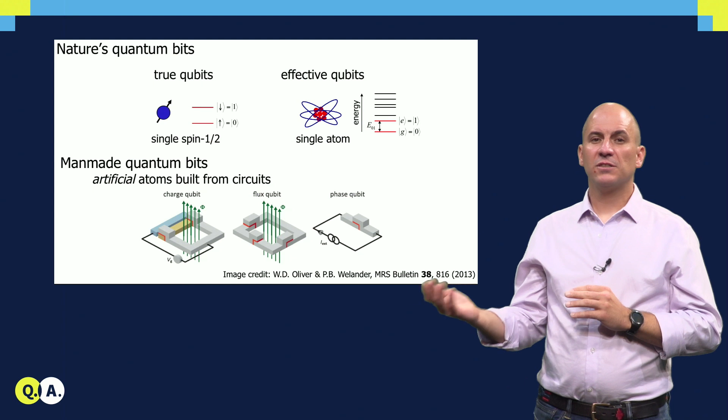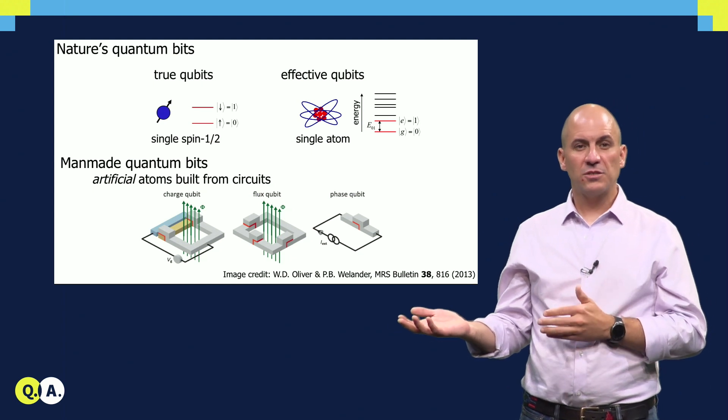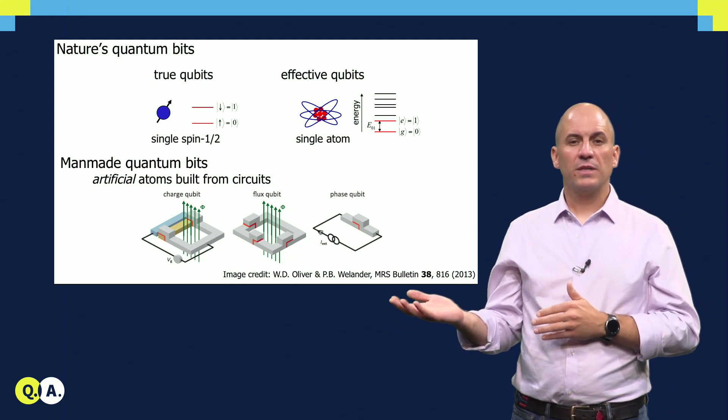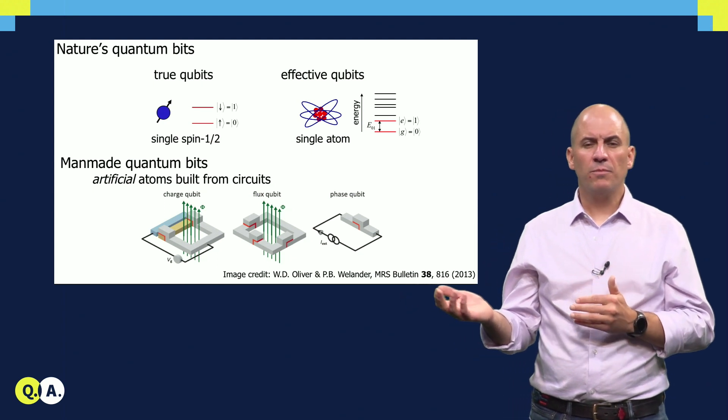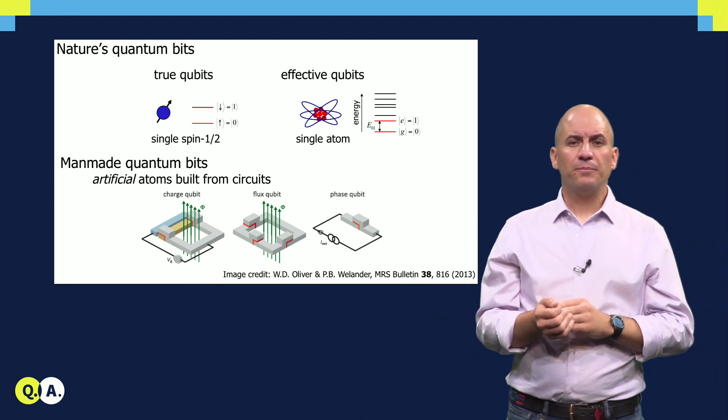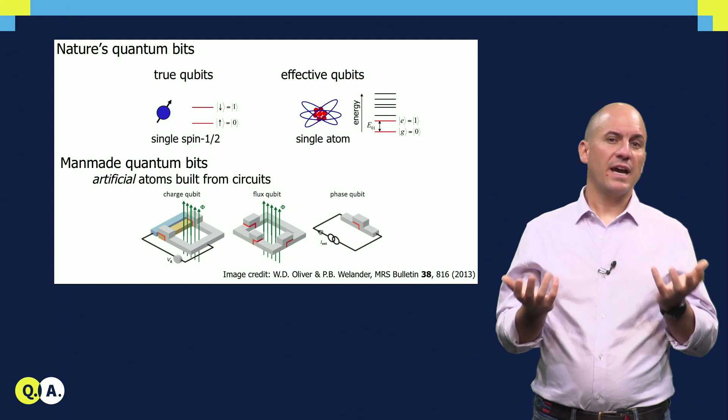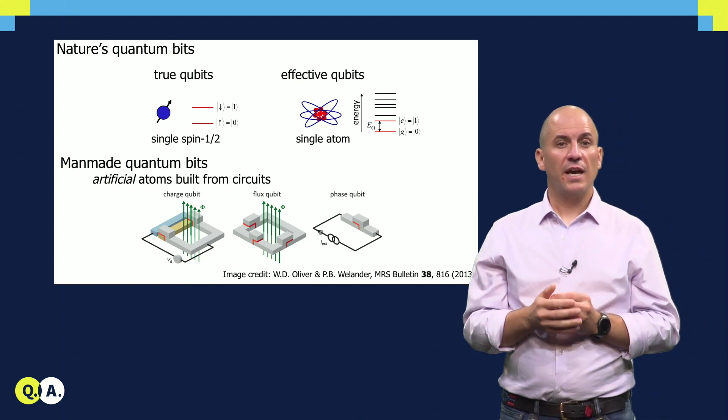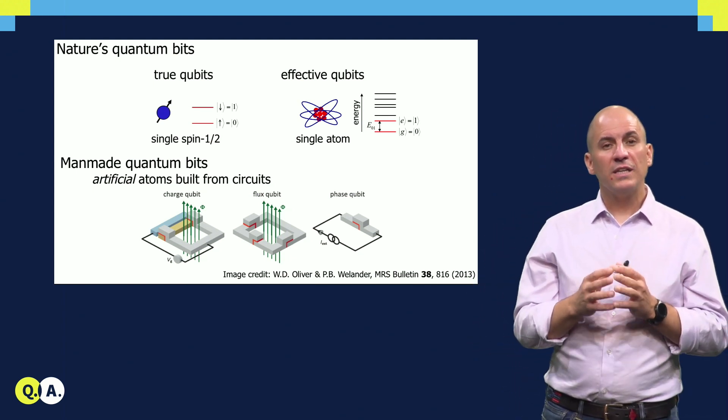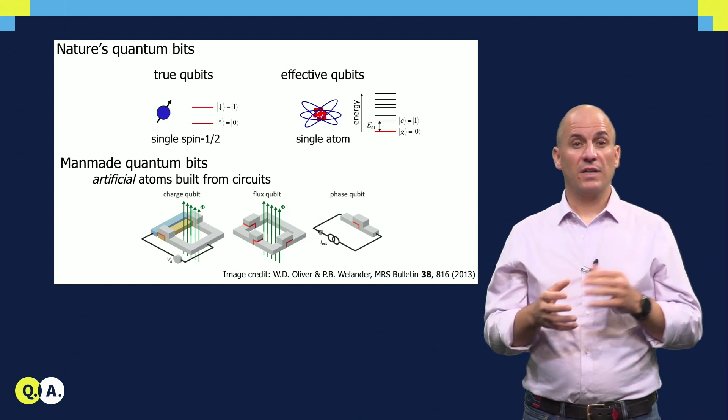There exist numerous varieties of superconducting qubits. The charge qubit, the flux qubit, the phase qubit, the fluxonium, and many more. These qubits differ in terms of the number of superconducting islands, the number of junctions, and also, quite importantly, the relative energy scales of the capacitive and inductive terms.